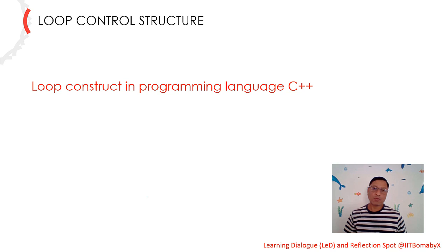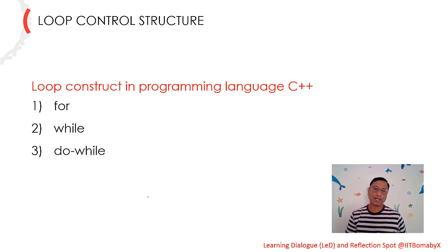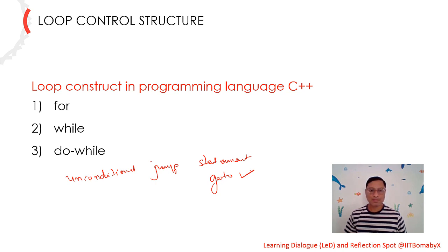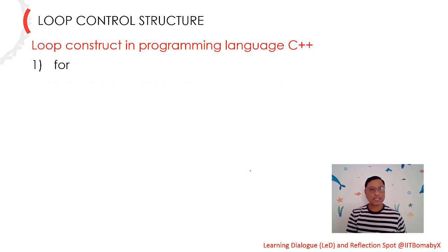The loop constructs in programming language C++ are: for, while, and do-while. Along with these three programming loop constructs, there is one unconditional jump statement. Using this unconditional jump statement, one can also perform the same task that can be performed by the loop control structures. So we can say there are four different ways to perform a repetitive task in C++. Let us discuss one by one.